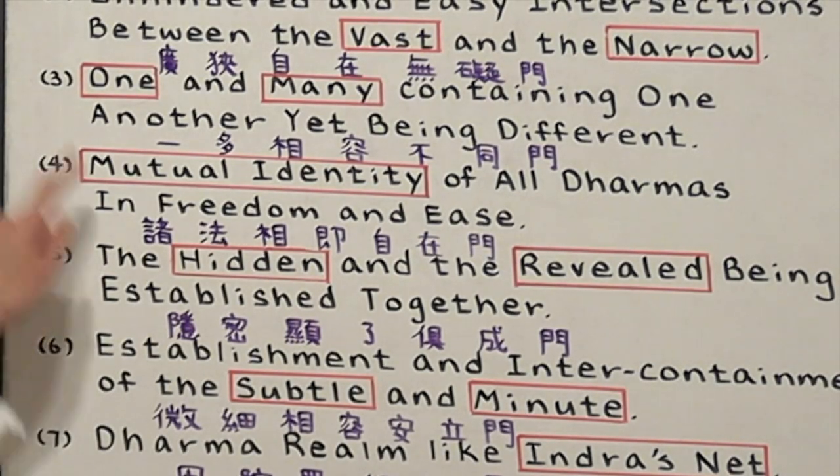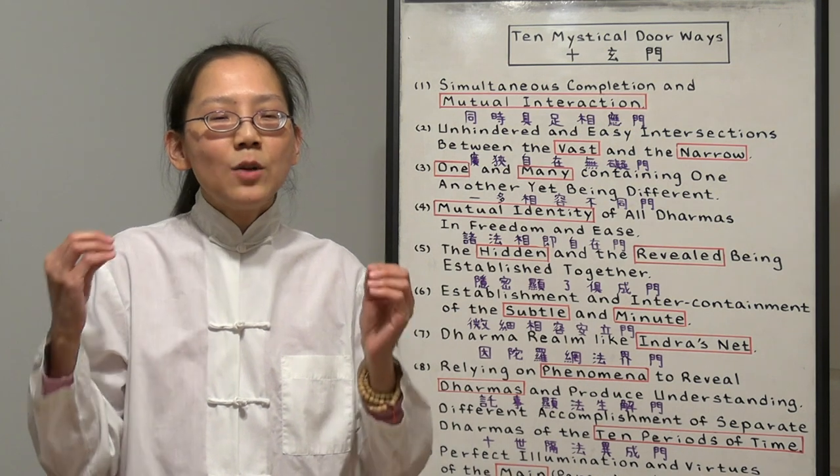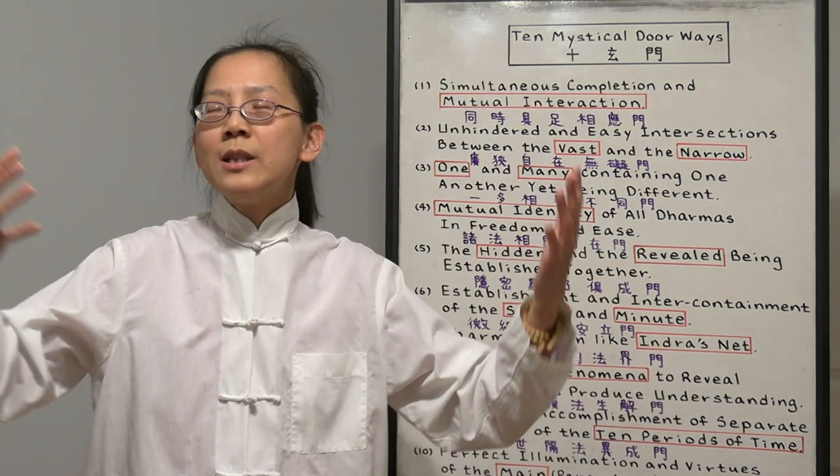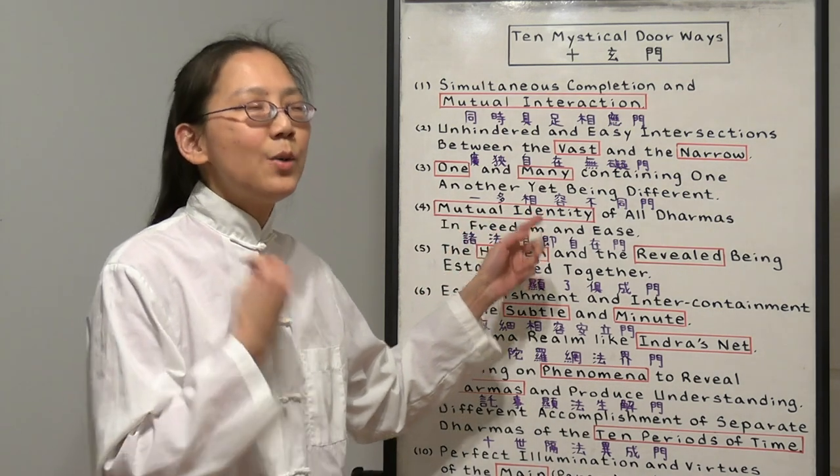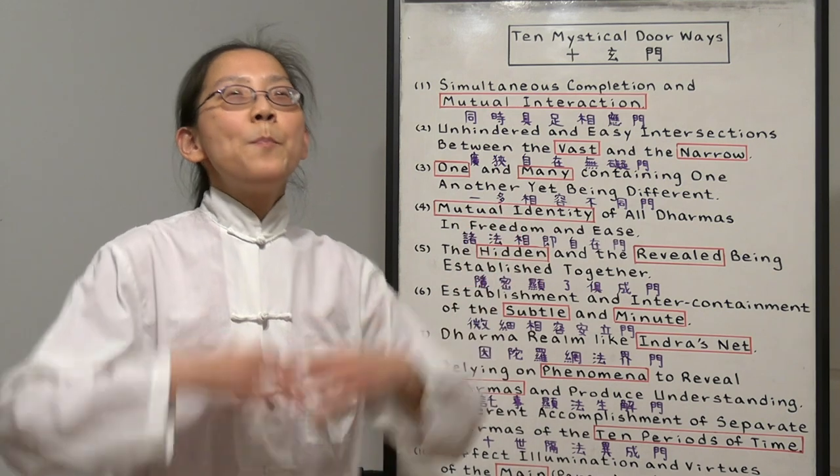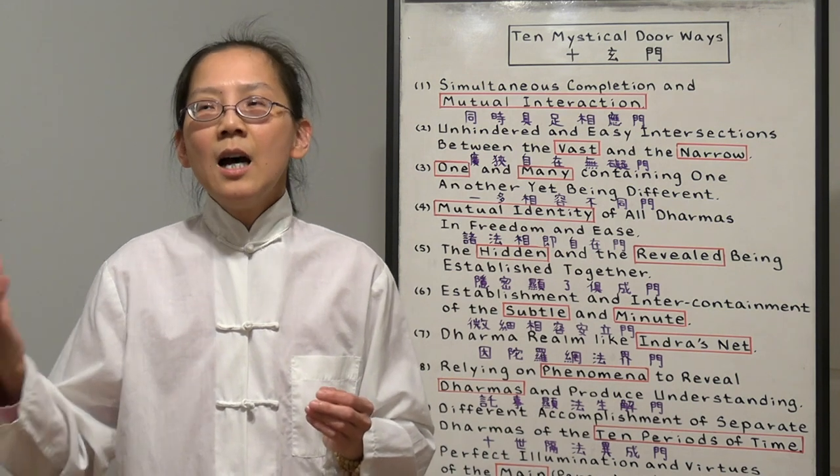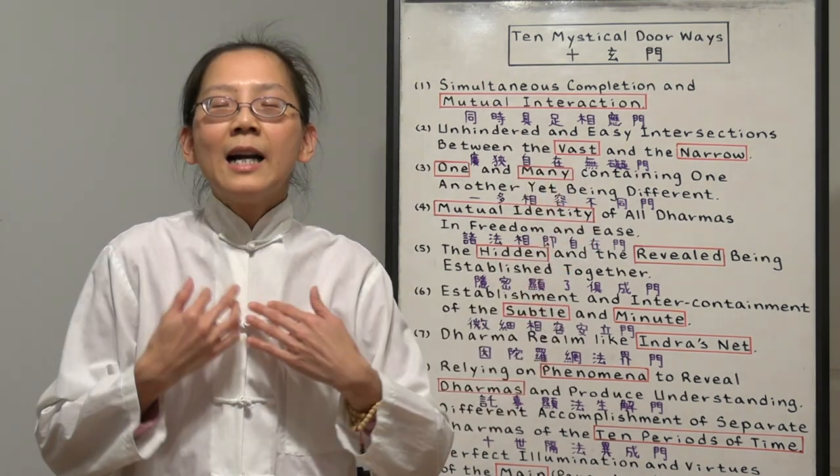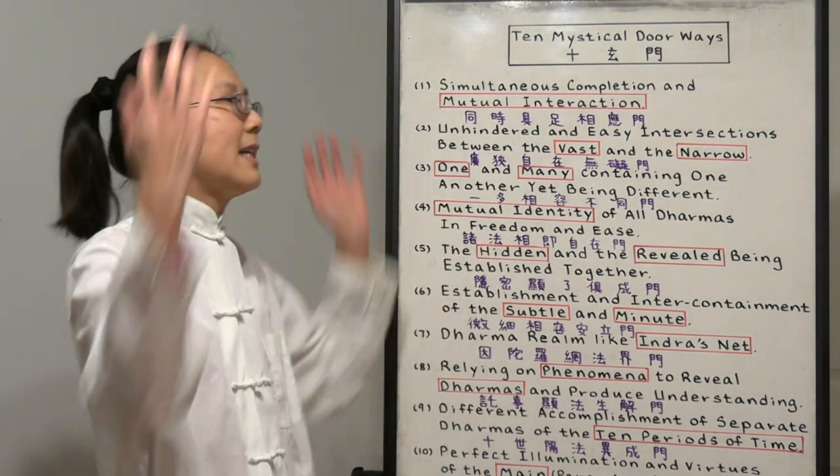Number four is mutual identity of all dharmas in freedom and ease. Everybody has an individual identity, but we can all be in harmony as one. Just like all the religions, Christian, Catholic, Buddhism. We can all mutually have our own identity, believe in our religion, but we have to be in harmony, mutually respect each other. Buddha wants us to open up our mind so everybody can live in harmony, have true respect to each other as if everyone is a Buddha. When you see everyone as Buddha, you are enlightened. Your true Buddha nature will come about. We have our own identity, but everyone is together as one.